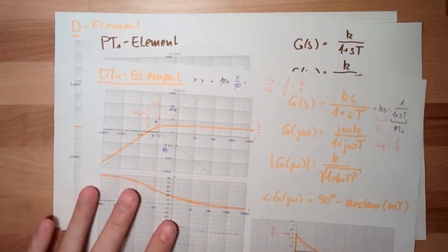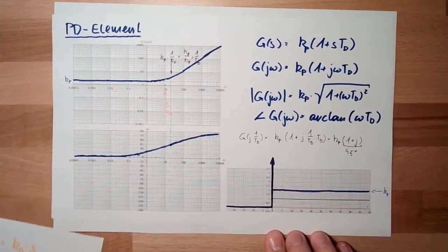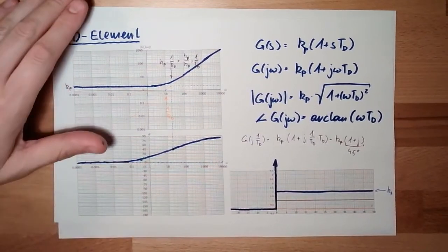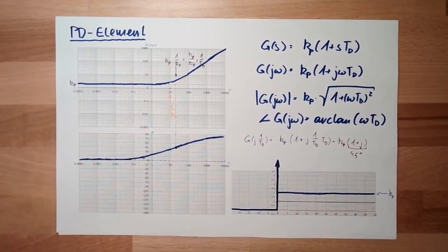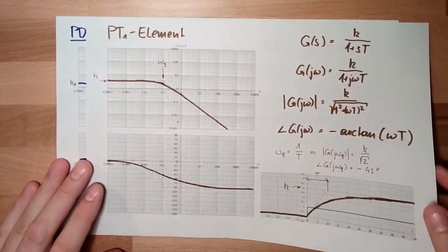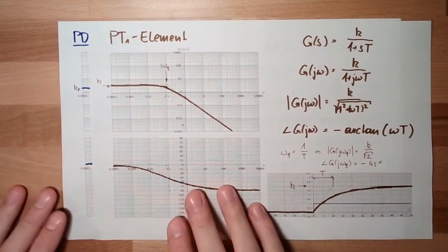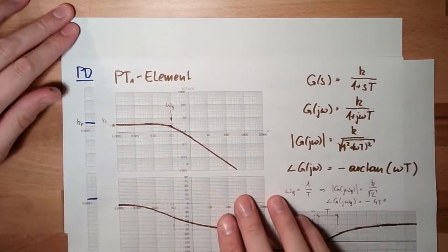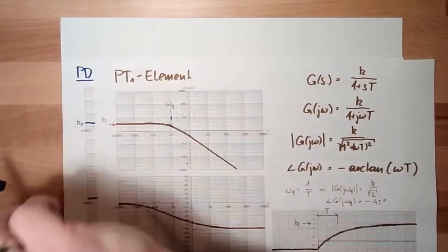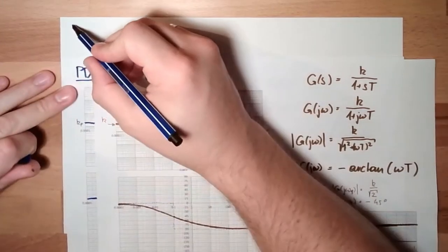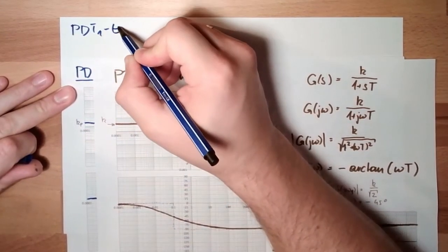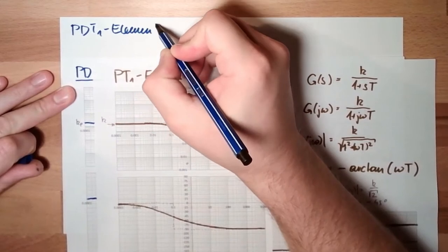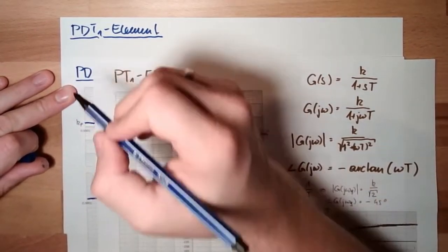I hope you also remember that I said the same thing here. This is not really existing. The PT1 element is not really existing. So we're going to do the same trick as before. We will use a BT1 element behind, and we end up in an element which is called the PDT1 element, which is basically the really existing PD element.